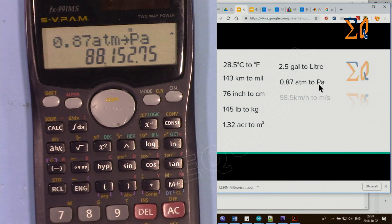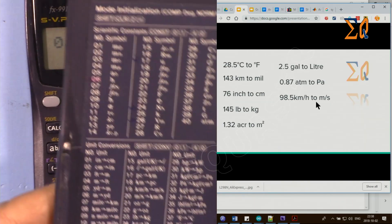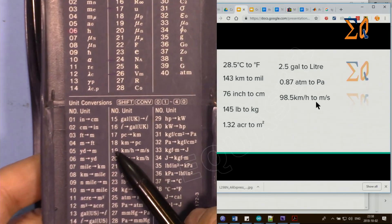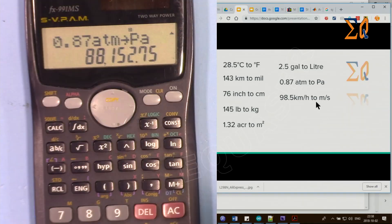If you're converting 98.5 kilometers per hour to meters per second, here we have number 19. So 98.5, and then convert, 19, gives you 27.36 meters per second.